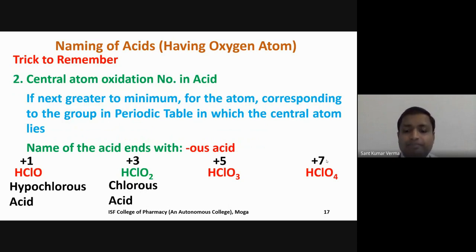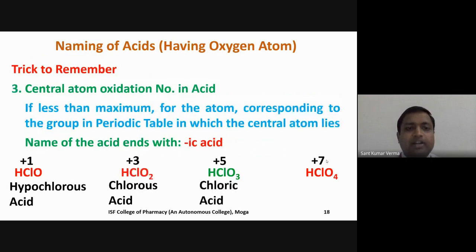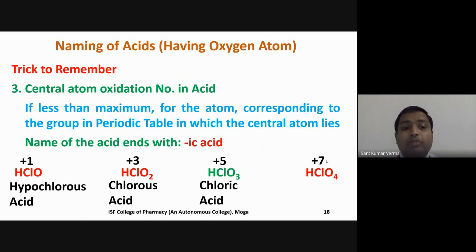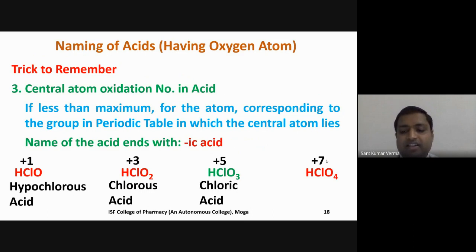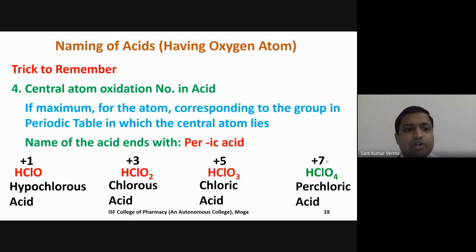Third trick: if the central atom oxidation number is less than maximum — for example HClO₃ has oxidation state +5 — the name ends with '-ic acid'. So HClO₃ is named chloric acid.